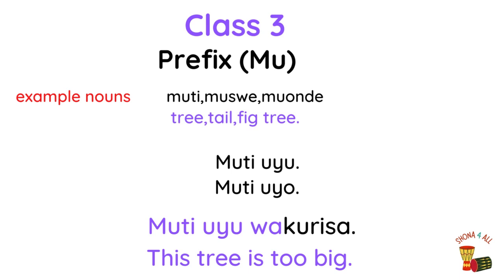Example phrase: Muti uyu wakurisa — this tree is too big. Muti uyu — this tree. Muti uyo — that tree.